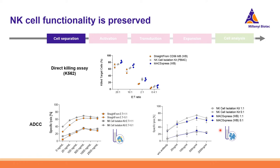Similarly, comparing the NK Cell Isolation Kit from PBMCs and the untouched whole blood approach, there is no difference between the two kits. Even with NKT cell contamination in the straight-from CD56 microbeads sample, you do not see any interference with the assay, as NKT cells usually express low amounts of CD16. The ADCC assay here was performed using RAJI cells and Rituximab, binding to CD20.